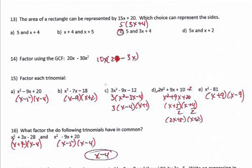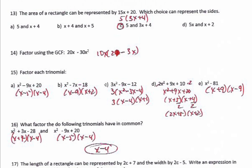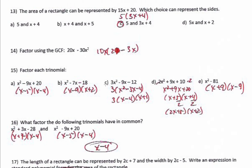The area of a rectangle is length times width, so if I factor 15x plus 20, I get the two things that multiply to equal it. This is just a roundabout way of saying factor 15x plus 20. They share a 5 in common, so that's 5 times (3x plus 4).